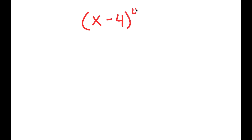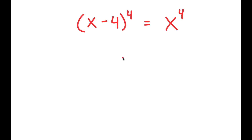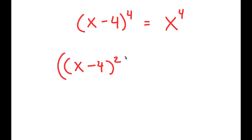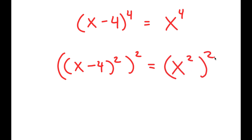In this video, I'm going to solve the problem (x minus 4) to the power of 4 is equal to x to the power of 4. To solve this, I'm going to first start by rewriting this as (x minus 4) squared to the power of 2 is equal to x to the power of 2 to the power of 2.